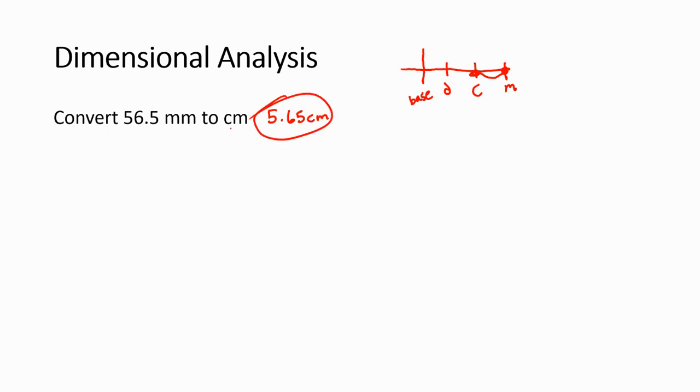But there's another approach that we could use called dimensional analysis. And I'll be honest with you, in a problem like this, where I'm going from one Greek prefix to another, probably moving the decimal is the easiest way to go. But there are all sorts of conversions in which moving the decimal is just not possible. So we're going to use this simple problem just to demonstrate the technique.